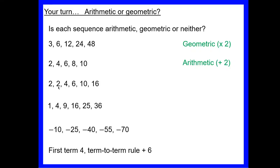The next sequence: 2, 4, 6, 10 — from 2 to 4 we add 2, from 4 to 6 we add 2, then we add 4, so it's not arithmetic. For geometric: 2 × 1 = 2, but 2 × 1 ≠ 4, so we're not multiplying either — it's neither. The sequence 1, 4, 9, 16: from 1 to 4 we add 3, from 4 to 9 we add 5 — not arithmetic; 1 × 4 = 4 but 4 × 4 ≠ 9 — not geometric. So that's also neither.